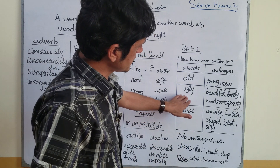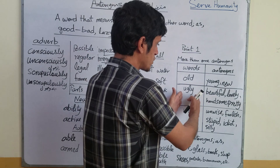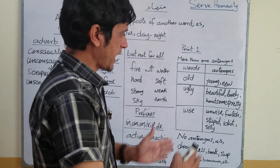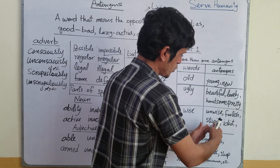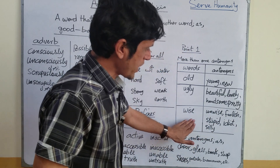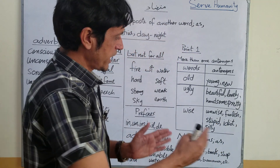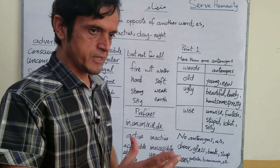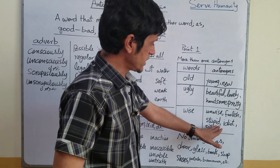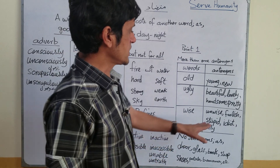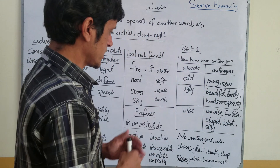Next, see that ugly also has more than one antonym: beautiful, lovely, handsome, pretty — all of these are antonyms of ugly. Ugly means بدصورت، beautiful and lovely and handsome and pretty all mean خوبصورت۔ Similarly, wise — its antonyms are: unwise, foolish, stupid, idiot, silly. So wise and idiot are antonyms of each other. If you have the word 'idiot' to find an antonym, you can write 'clever' or also 'wise.' Stupid's antonym can be 'wise,' and unwise's antonym is 'wise.' They are all antonyms of each other.